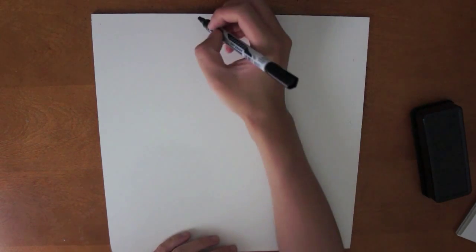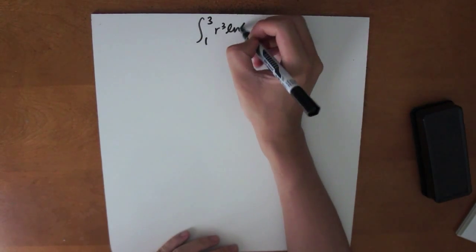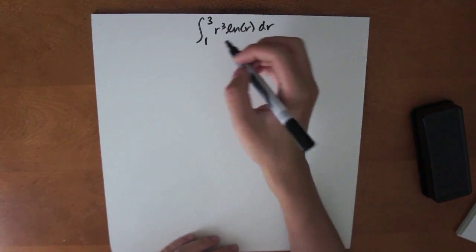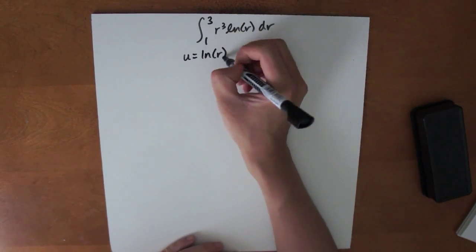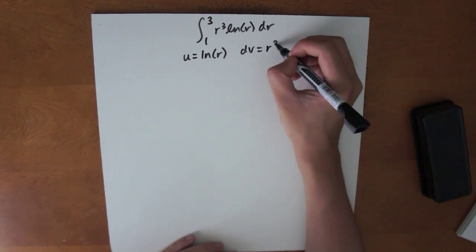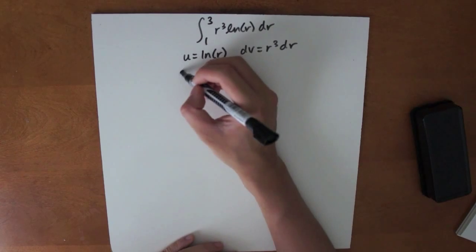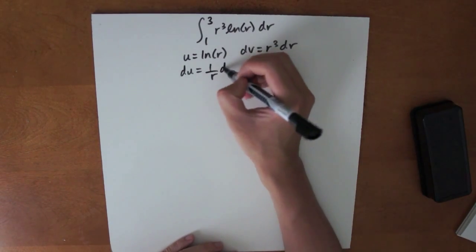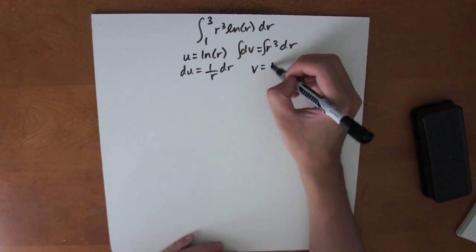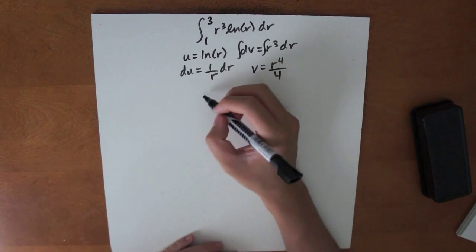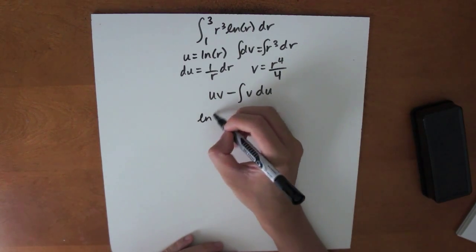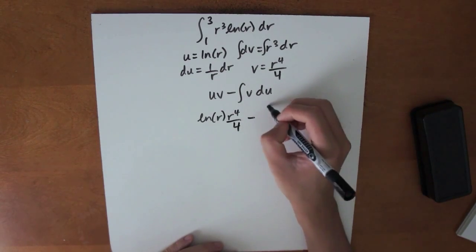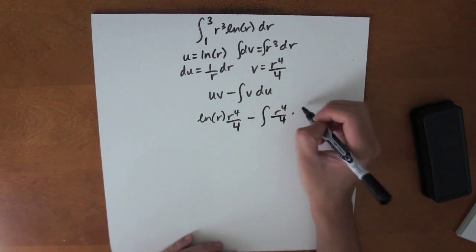Now let's try evaluating definite integrals using integration by parts. Let's do the integral from 1 to 3 of r cubed ln of r dr. Logarithms come before polynomials in LIATE, so u is set equal to ln of r, and dv is r cubed dr. We differentiate here — du is equal to 1 over r dr. We integrate here — v is equal to r to the 4th divided by 4. Now we use the formula u times v minus the integral of v times du, giving us ln of r times r to the 4th over 4 minus the integral of r to the 4th over 4 times 1 over r dr.